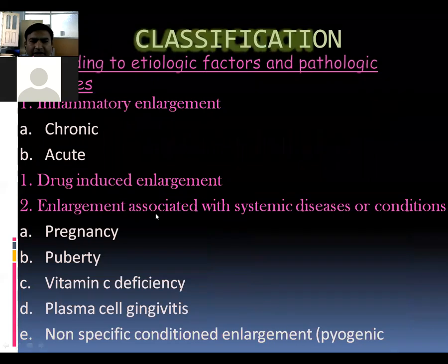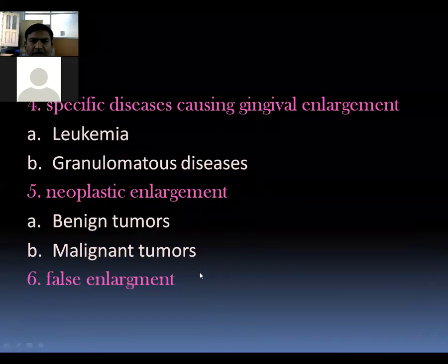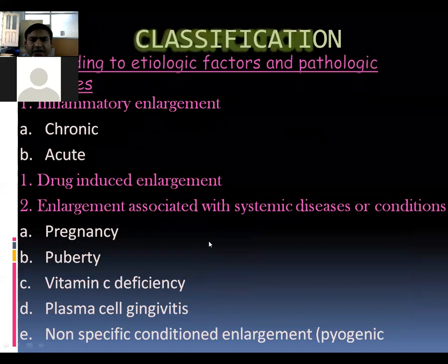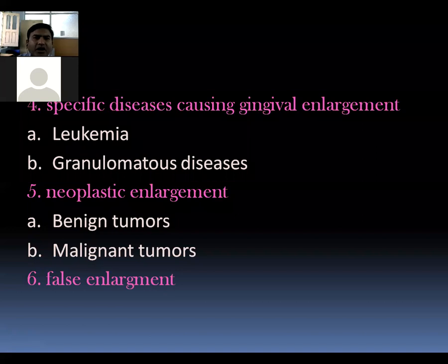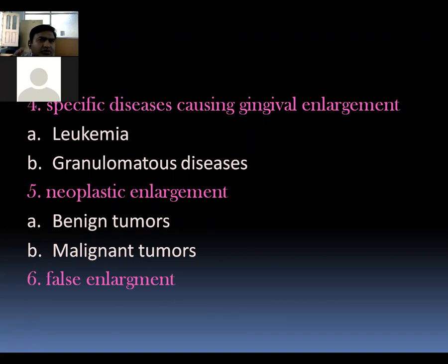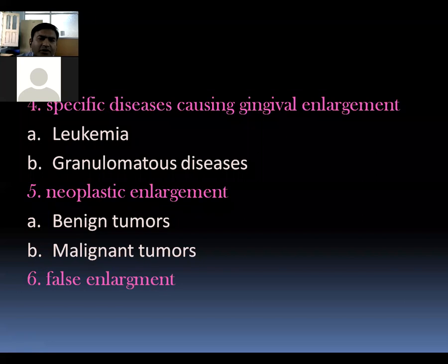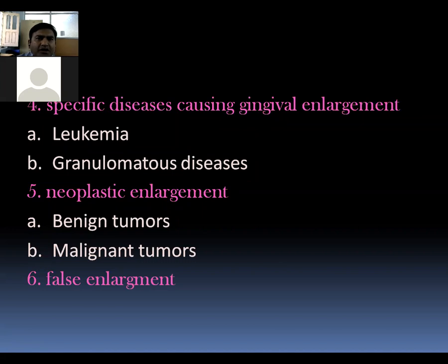The classification has already been covered. According to etiology, there are different types — because of deficiencies like vitamin C, pregnancy, or hormonal changes. An important thing people often confuse is false enlargement, which is not because of gingival tissue but because of underlying hard tissue. For example, in the tuberosity area, you must palpate to see how much is soft tissue versus hard tissue — like the mandibular tori, which has a covering of gingiva but is actually hard tissue underneath.